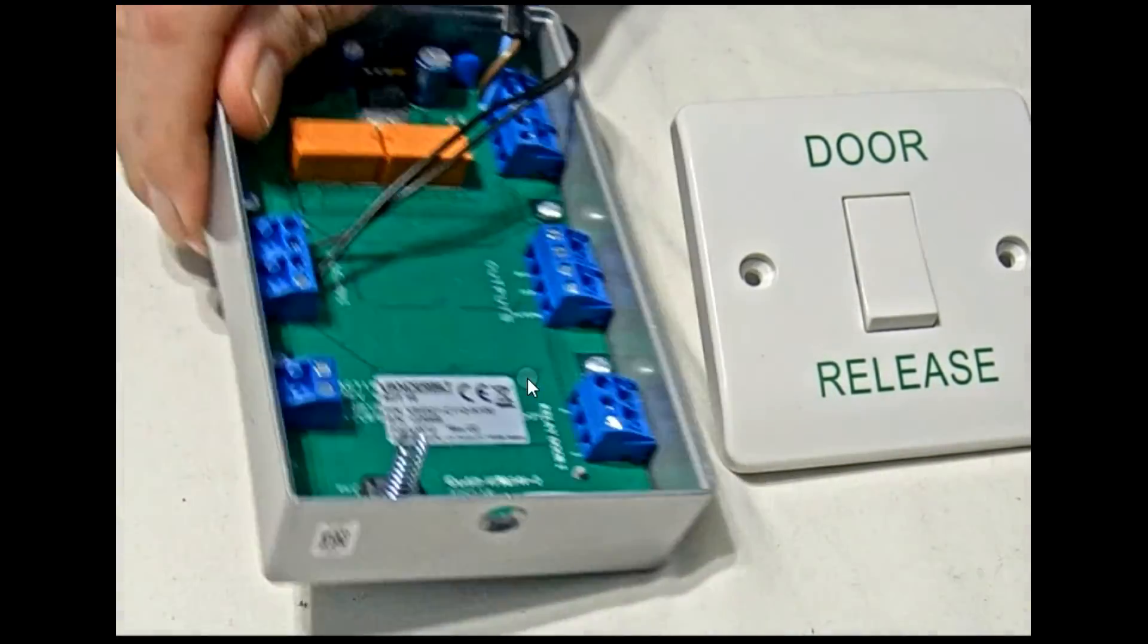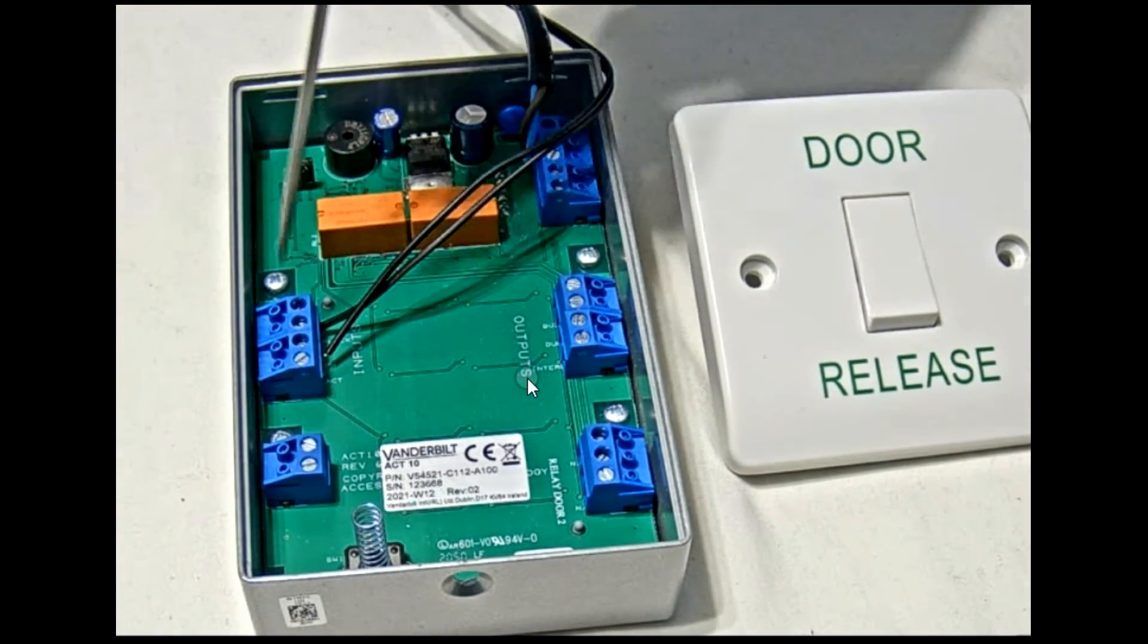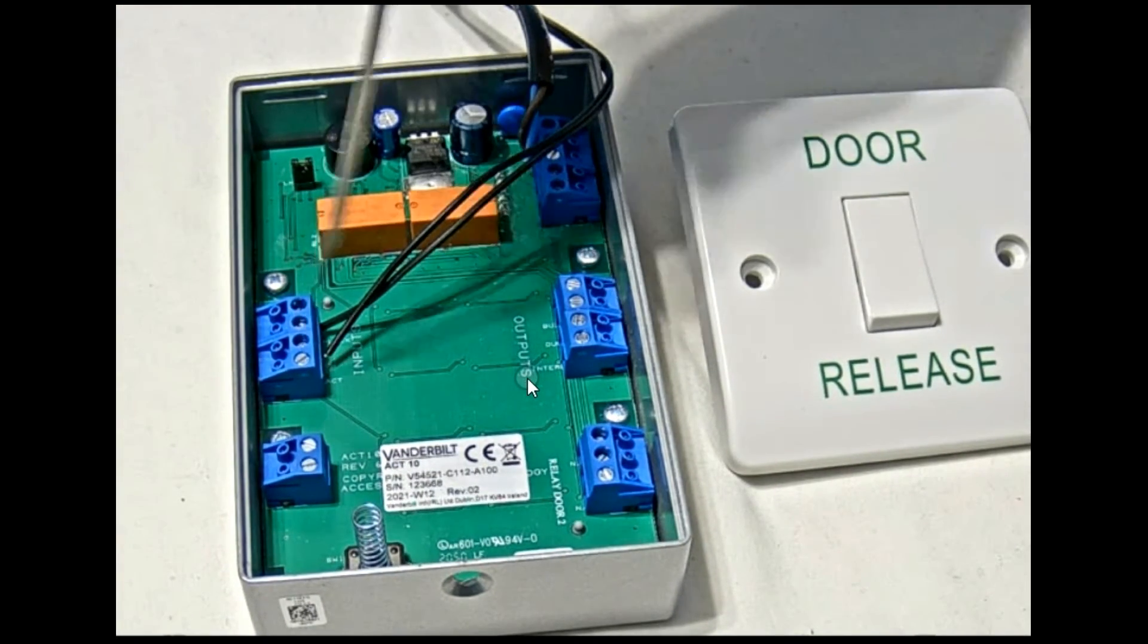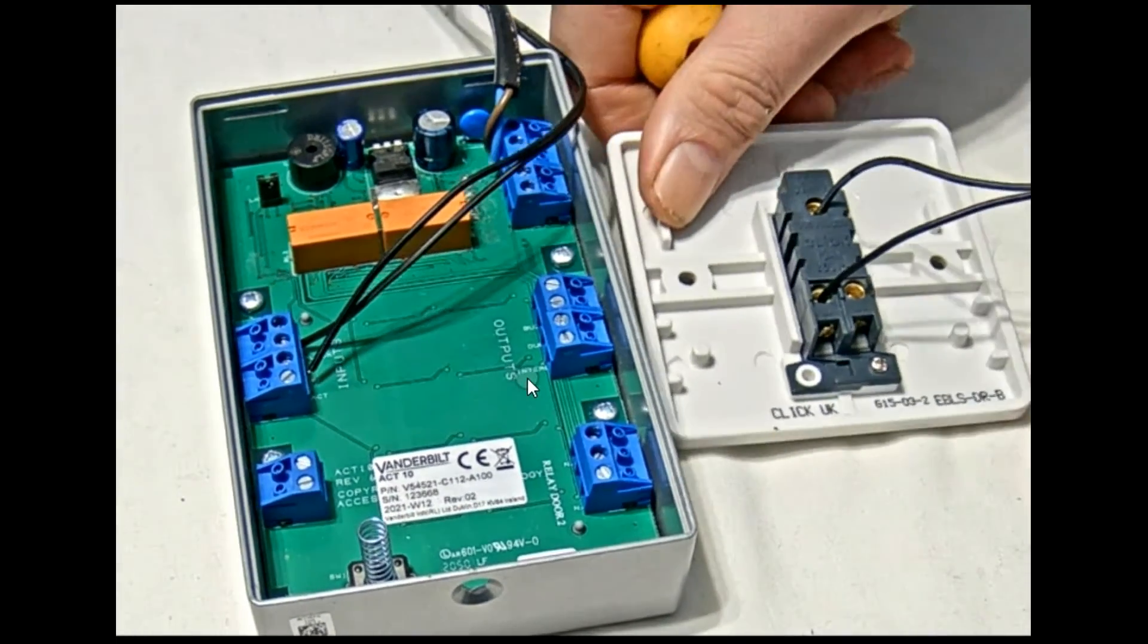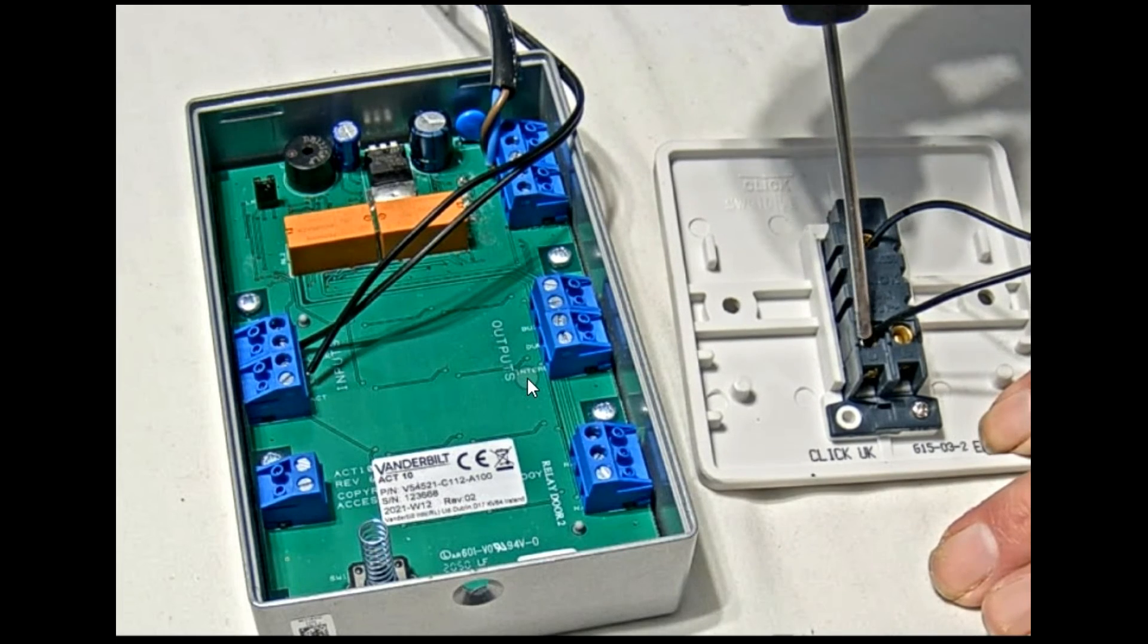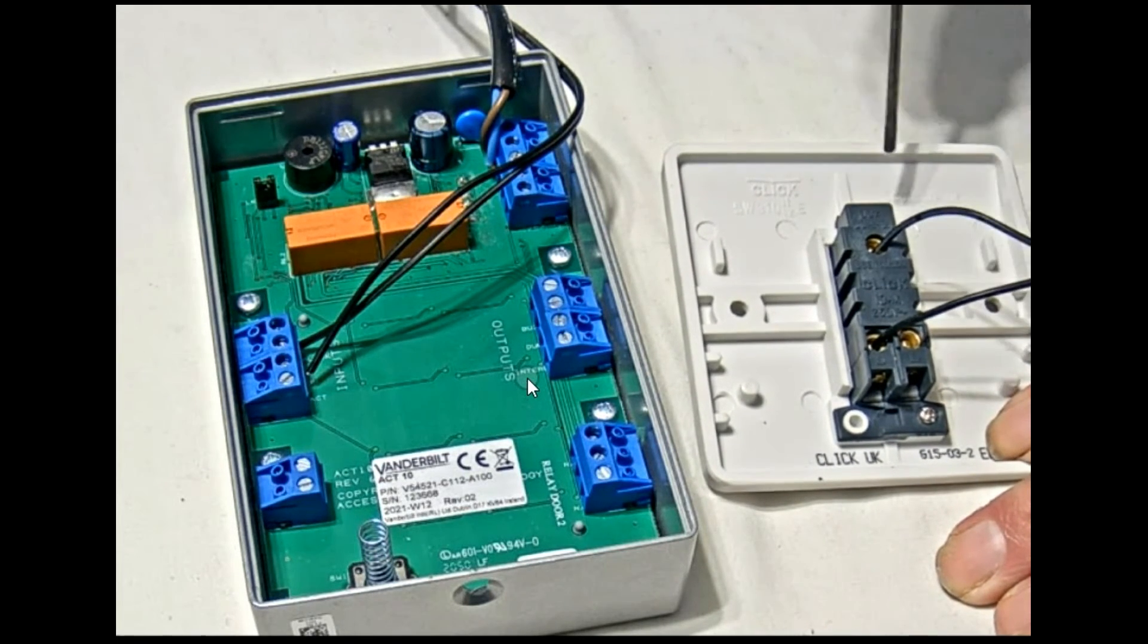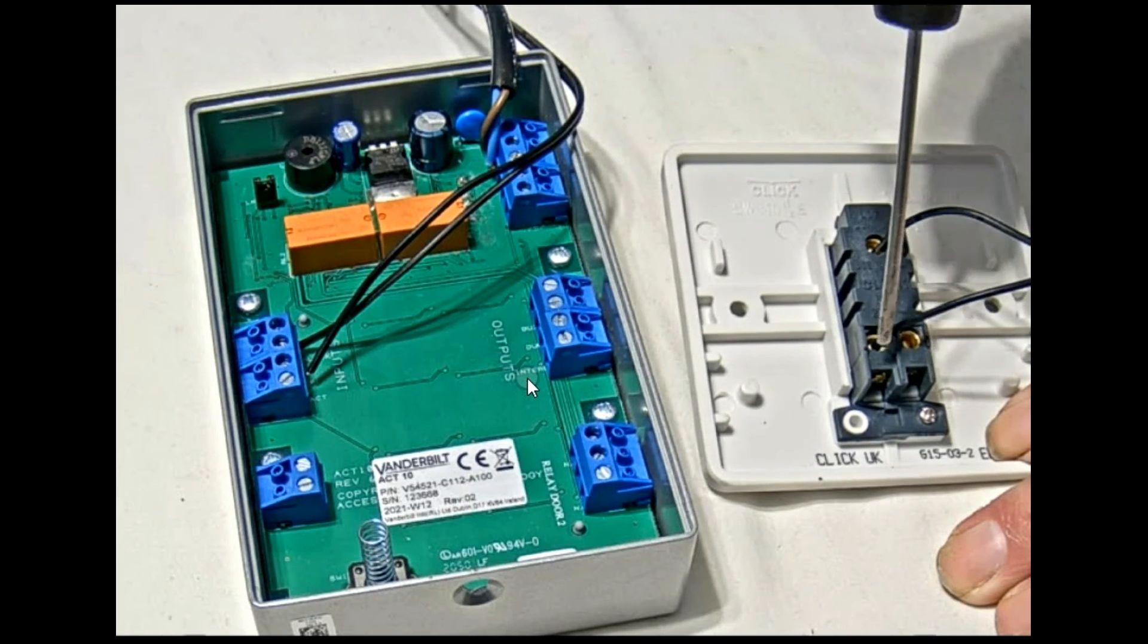So just to recap, on the back of the keypad, you have zero volts and PB, and on the back of the exit button, it's common to normally open. On a main switch like this, that would be common to L1.